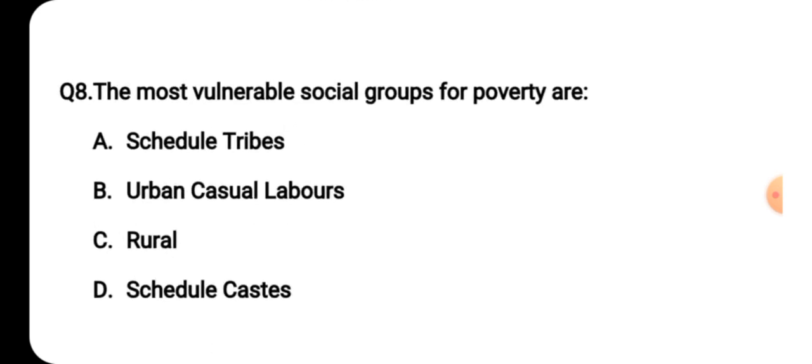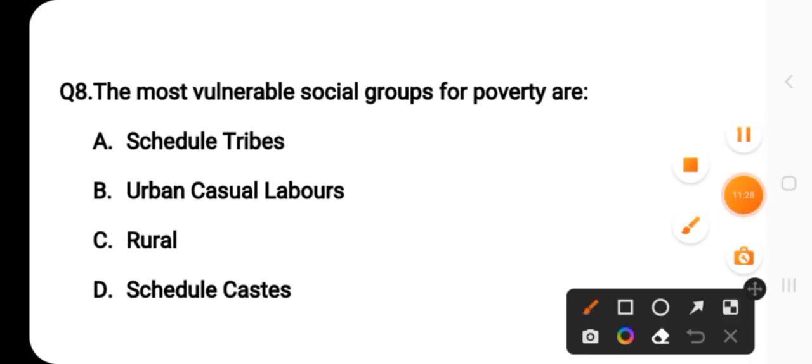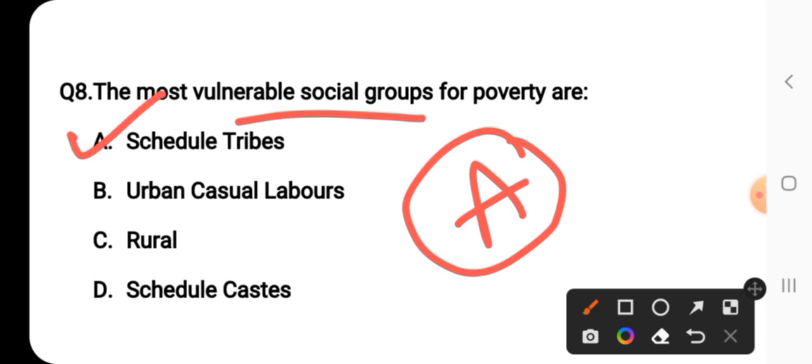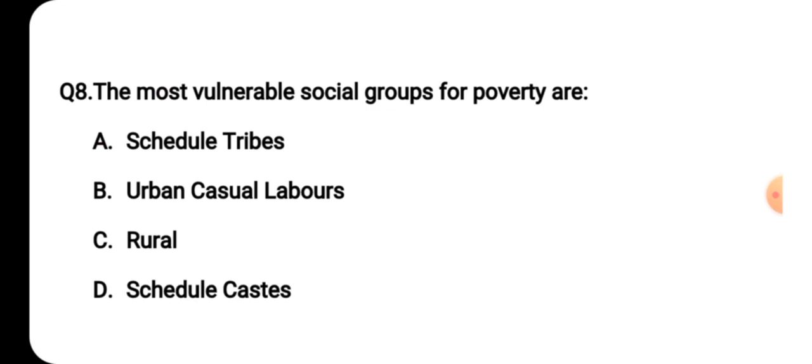Question number eight: the most vulnerable social groups for poverty are? The answer is option A — scheduled tribes. Scheduled tribes are the most vulnerable social group in terms of poverty. So option A is the right answer.